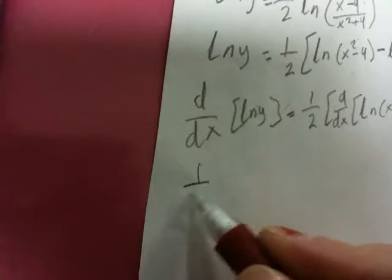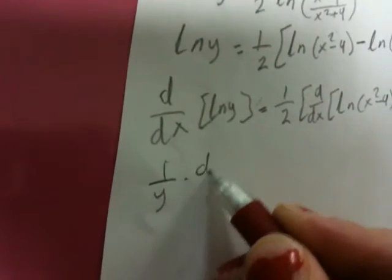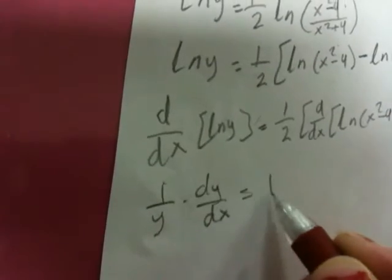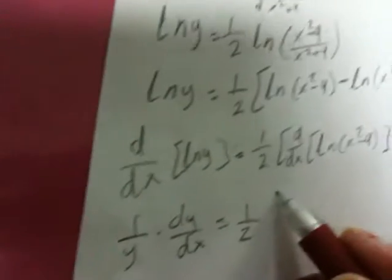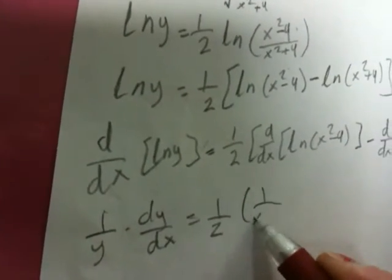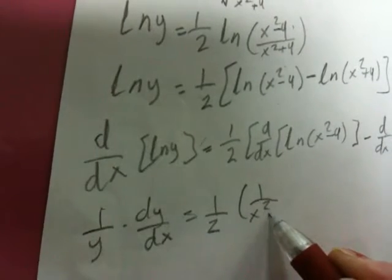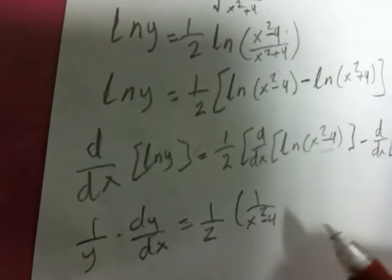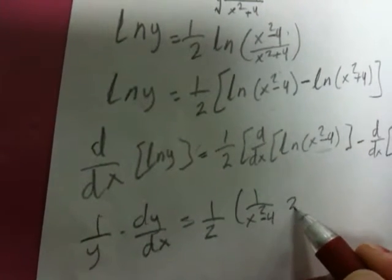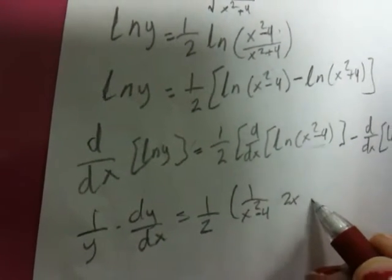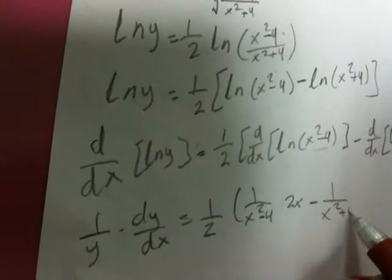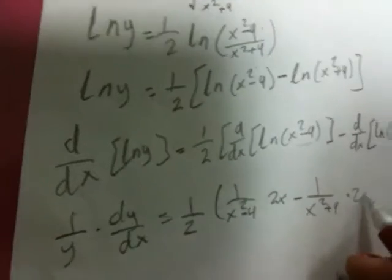Now we have 1 over y times dy/dx equals one-half. We have 1 over (x squared minus 4) — since the derivative of ln gives 1 over the expression — times 2x, minus 1 over (x squared plus 4) times 2x.